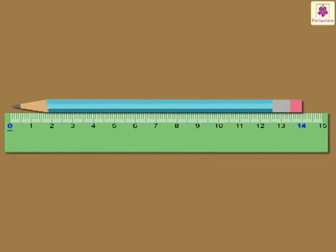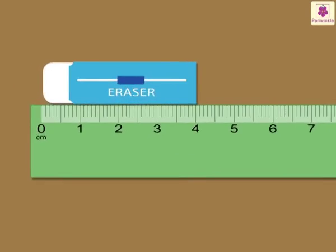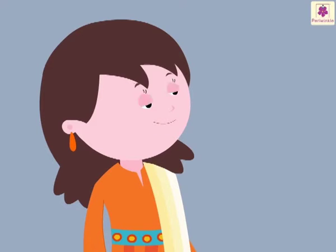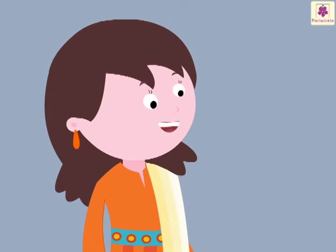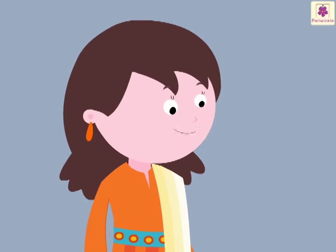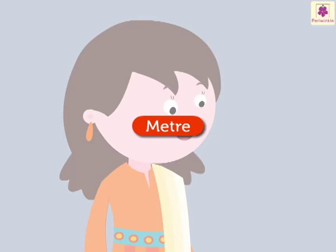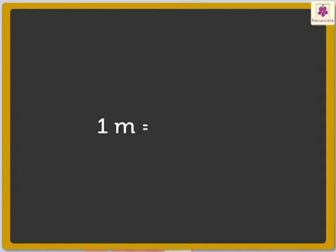Correct. Now, let us measure this eraser. I think it is 4 centimeters. Correct. So, now you know how to measure the length of small objects. But longer objects cannot be measured with this small ruler. They are measured in a bigger unit called meter. 1 meter is written in short as M.